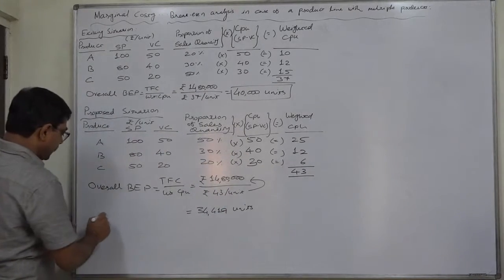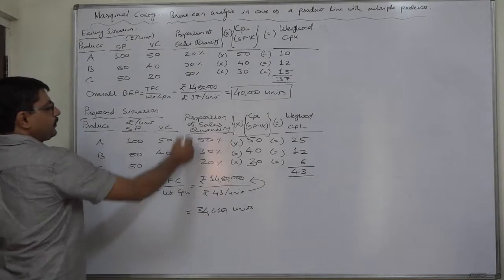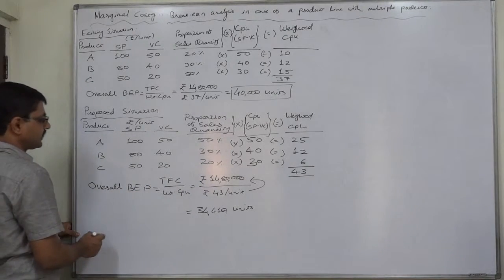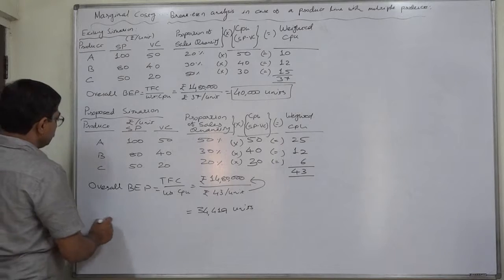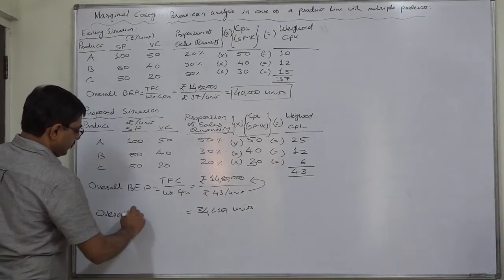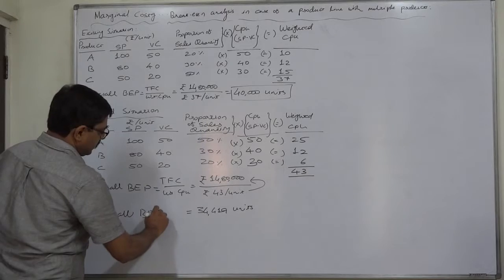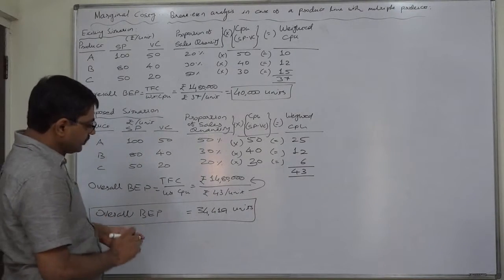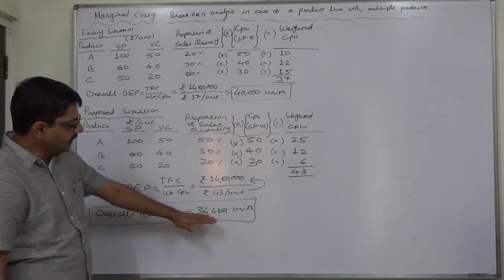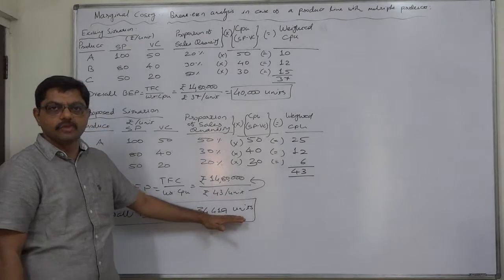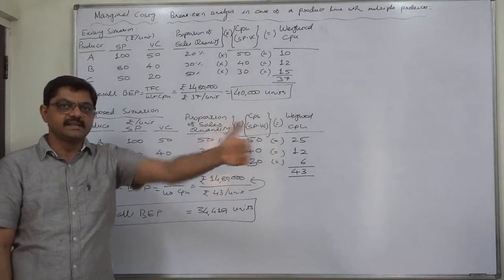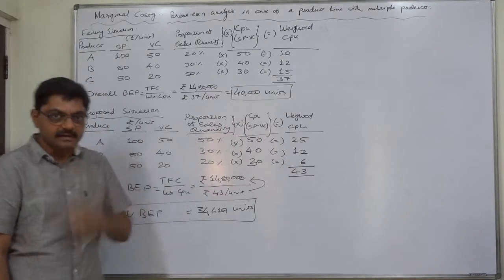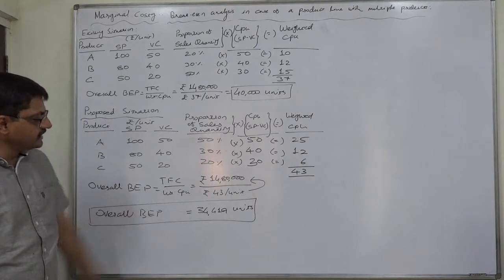That means if the company adopts the new proportion of sales quantity or new sales mix proportion, the overall BEP will go down. And that is good for the financial health of the company, because now the total fixed cost will be recovered by selling this much units only, and the profit-making stage comes at the earlier time.